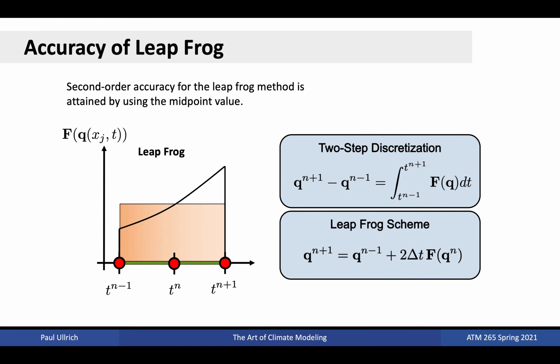The leapfrog method attains this second order accuracy by using the midpoint to estimate the integral. The resulting scheme then looks like the form shown here in the bottom right. Graphically, the method looks like the image on the left. The improved accuracy of this estimate to the integral is clear on noting that the overestimate for values of t between tn minus 1 and tn matches well with the underestimate for values of t after tn and before tn plus 1. That is, we can transpose the overestimated triangular region on the left to the right in order to estimate its underestimated value.